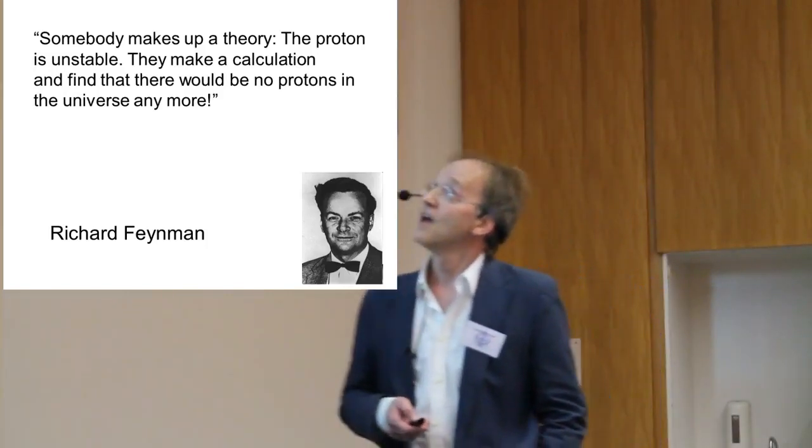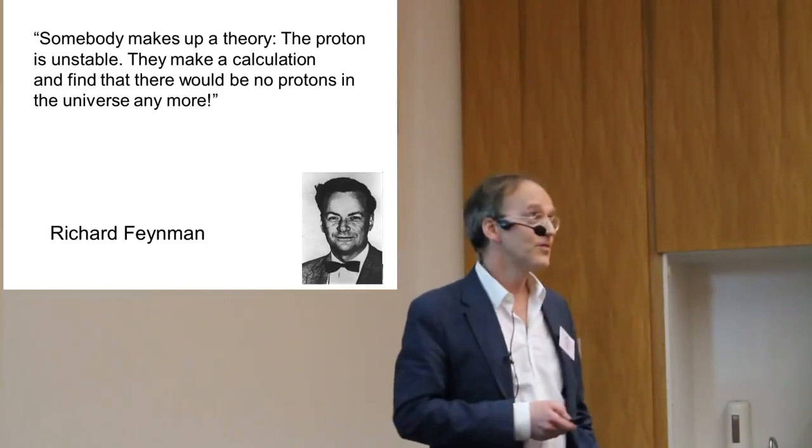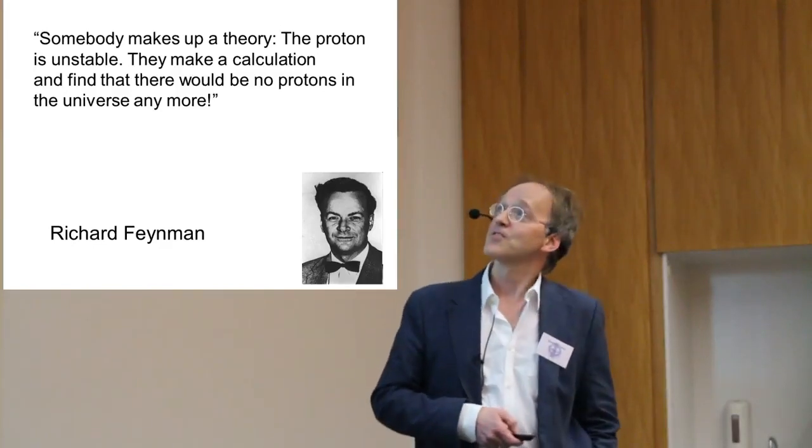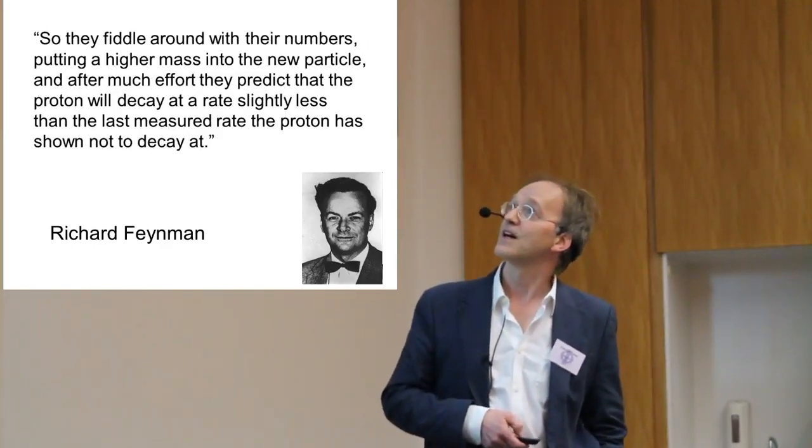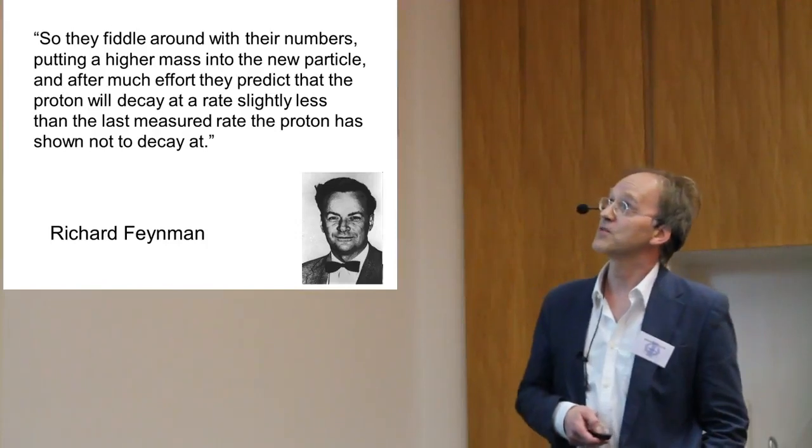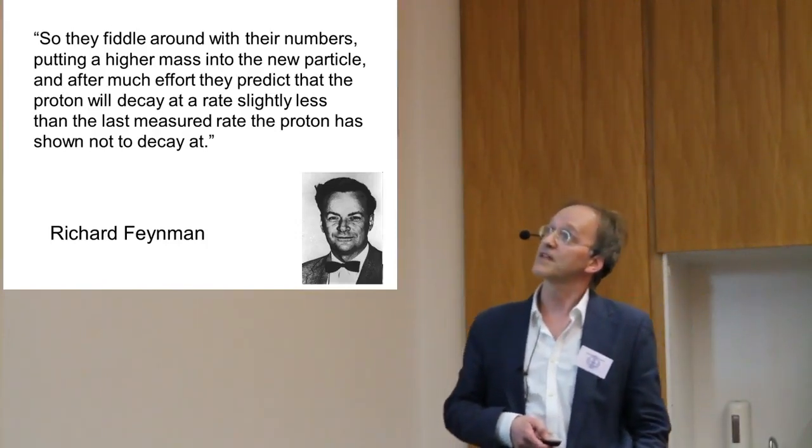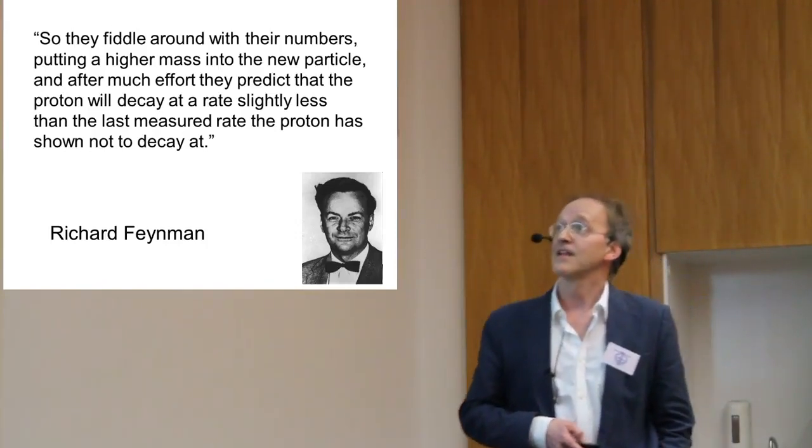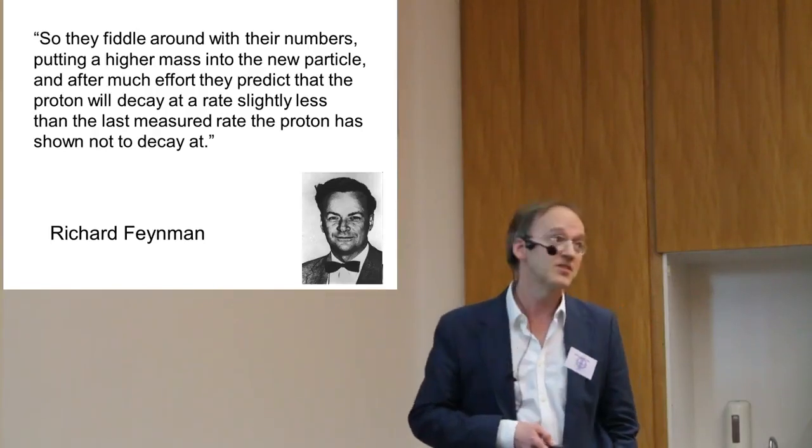Somebody makes up a theory, the proton is unstable. They make up a calculation and find that there would be no more protons in the universe anymore. So they fiddle around with their numbers, putting a higher mass into the new particle. And after much effort, they predict that the proton will decay at a rate slightly less than the last measured rate the proton has shown not to decay it.